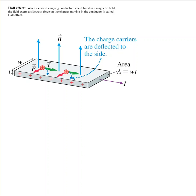I'm going to talk about a simple concept called the Hall effect. The Hall effect is when you place a current-carrying conductor fixed in a magnetic field — assuming the conductor cannot move — the electrons inside that conductor are going to move to one side of the conductor.